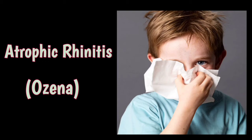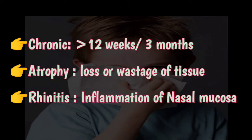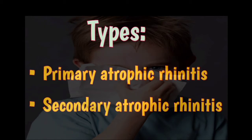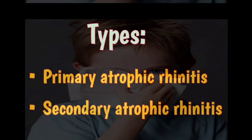This video is about atrophic rhinitis, also called ozena. Atrophic rhinitis is a type of chronic rhinitis. Chronic is a condition which is of more than 12 weeks or 3 months in duration. Atrophy means loss or wastage of tissue, and rhinitis means inflammation of the nasal mucosa. Atrophic rhinitis is chronic inflammation of the nose characterized by atrophy of nasal mucosa and turbinate bones, and the nasal cavities become roomier and filled with foul-smelling crusts.